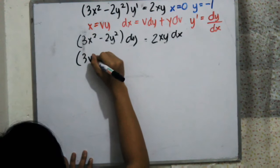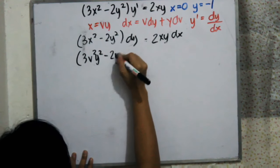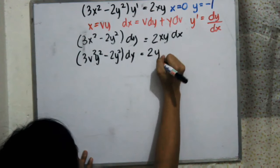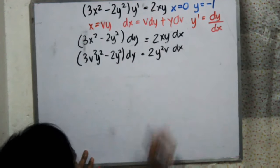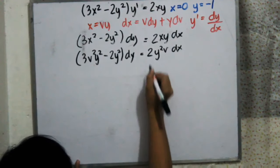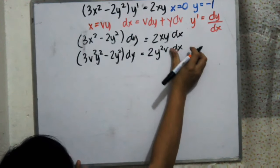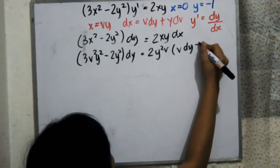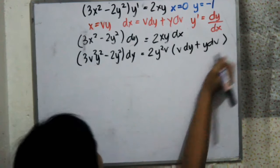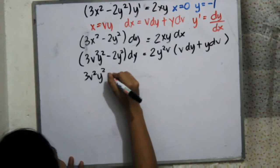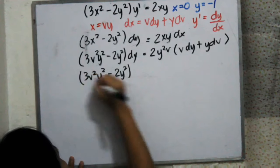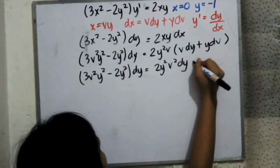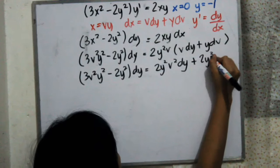Now we substitute our value of x, which is vy, and also substitute dx with vdy plus ydv. Then we distribute to get 2y squared v squared dy plus 2y cubed v dv.